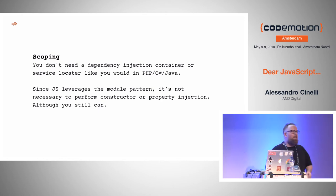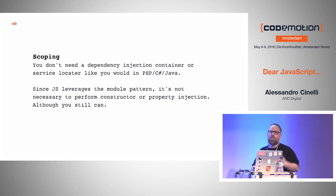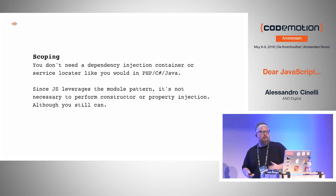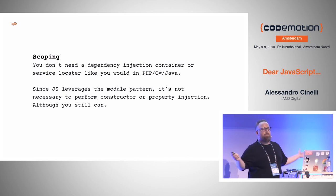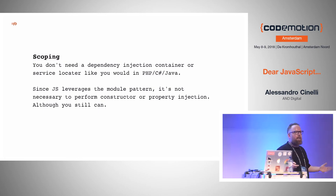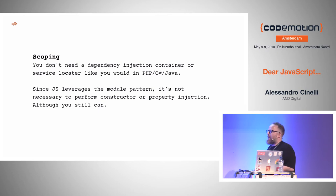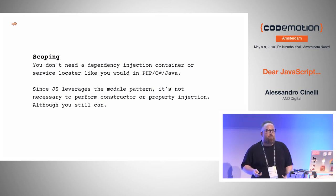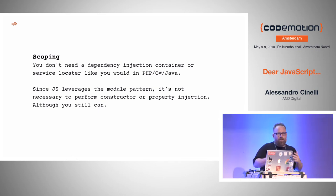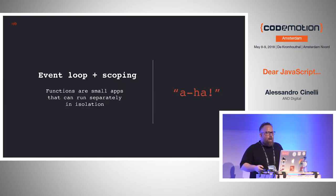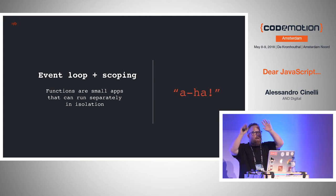One thing that happens frequently — I've seen this with other languages too. People moving from Java or PHP to Go want to implement a dependency injection container first, because they think that's the best practice. But languages are different. In JavaScript, you usually don't need a dependency injection container because you can leverage the scoping mechanism instead.